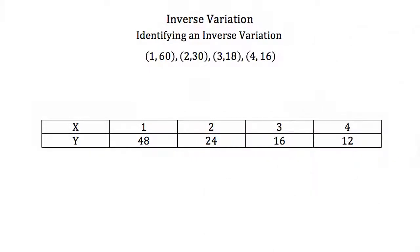How do we know if we have an inverse variation problem? Here we're given several points: (1,60), (2,30), (3,18), and (4,16). To check if this is an inverse variation, we use the formula y equals k over x. Plugging in x equals 1 and y equals 60, we'll get a k value.